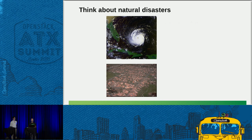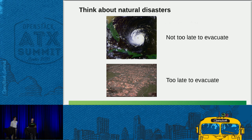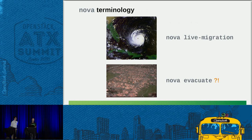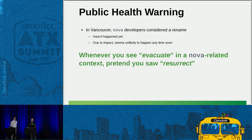The reason I say that is: if you think about natural disasters, in one scenario there's a hurricane offshore and the forecasters can see it coming, so everyone has advanced warning and can evacuate in time. In another scenario, the devastation has already occurred and a typical evacuation is too late. Translating this to Nova: the first scenario is like nova live migration where maintenance is planned, and the second scenario is unplanned — a big failure has already happened. In that case 'evacuation' is not really the right word. In Vancouver the Nova developers discussed renaming it to 'nova resurrect' or something, but it hasn't happened and probably won't anytime soon — so whenever you hear nova evacuate, just pretend you heard nova resurrect.